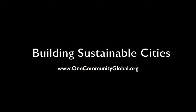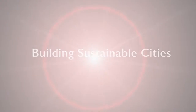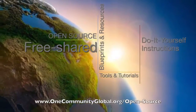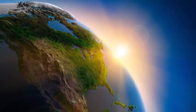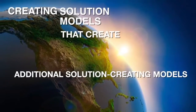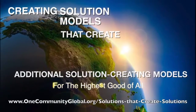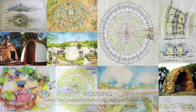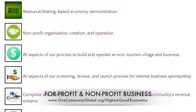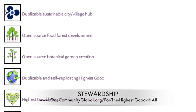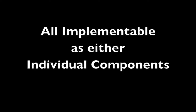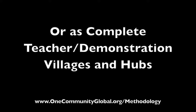Building Sustainable Cities: One Community Weekly Progress Update Number 206. One Community is a 501c3 non-profit organization creating open source and free shared blueprints and resources, tools, tutorials, and do-it-yourself instructions for highest good living — creating solution models that create additional solution-creating models in the service of all life on this planet. This includes highest good approaches to food, energy, housing, education, for-profit and non-profit business creation, society, and true earth stewardship — implementable as individual components or as complete teacher demonstration villages and hubs.